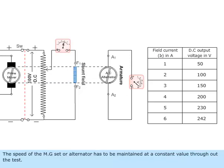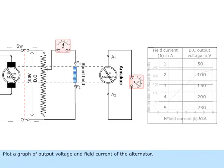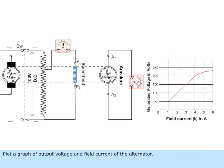The speed of the MG set or alternator has to be maintained at a constant value throughout the test. Plot a graph of output voltage and field current of the alternator. This curve is called the open circuit characteristic of the alternator.